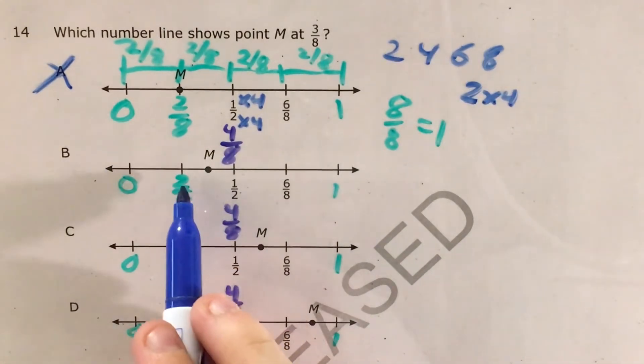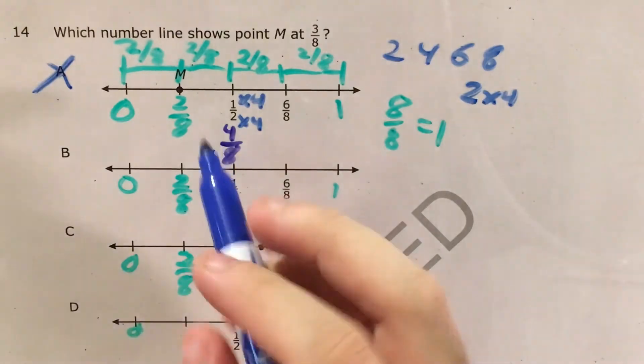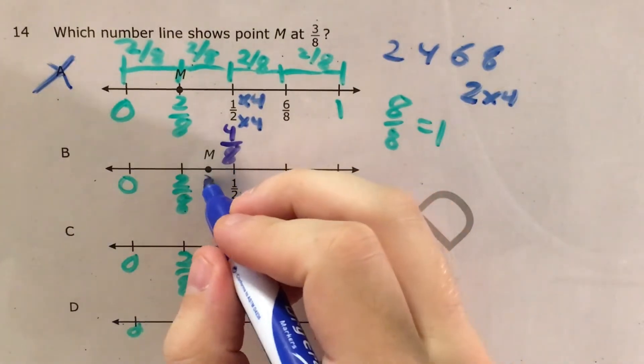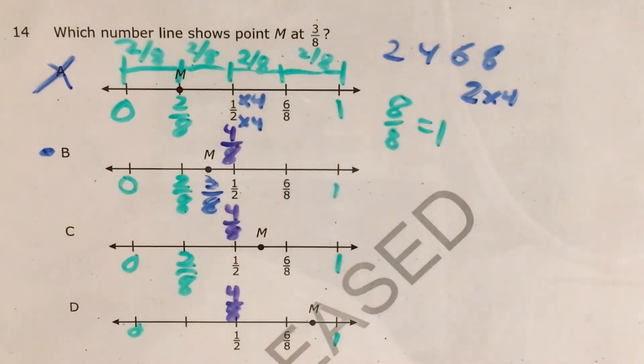Choice B, I see that M is right between two-eighths and four-eighths. And the number right between two and four is three. So I'm reasonably sure that this is three-eighths, but I want to knock out C and D just to be sure.